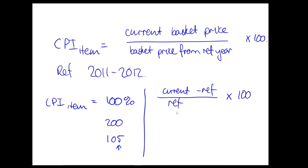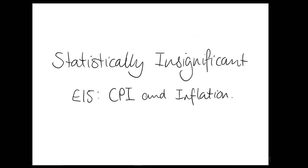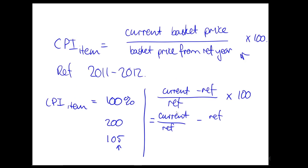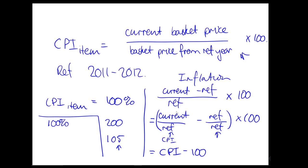So to get inflation, you have to do a slightly different calculation, which is current basket price minus reference basket price divided by reference basket price, then you multiply that by 100. But this actually becomes a rather simpler calculation if you already have the CPI, because you can break up this fraction and you get current divided by reference minus reference divided by reference, all multiplied by 100. But this is your CPI, so what you actually get out is CPI minus 100. So if we come back to our examples, a 100 CPI would be zero inflation. 200 CPI would be 100% inflation. Our 105 CPI would be 5% inflation.